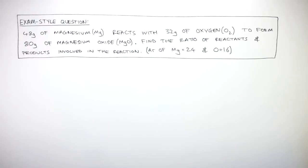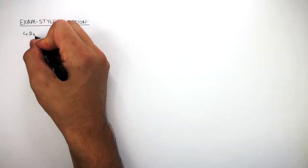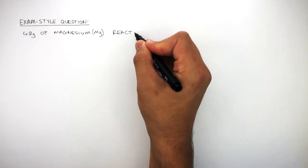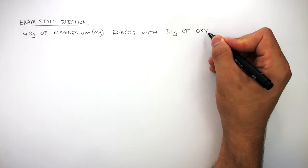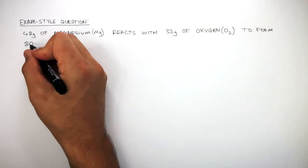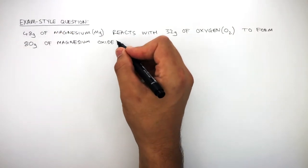Here's an exam style question where it says, 48 grams of magnesium (Mg) reacts with 32 grams of oxygen (O2) to form 80 grams of magnesium oxide (MgO).